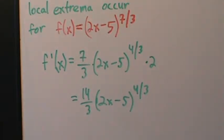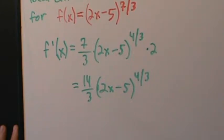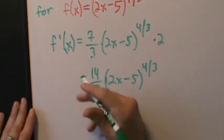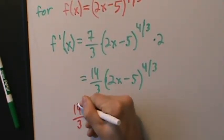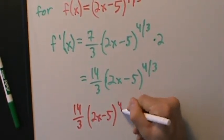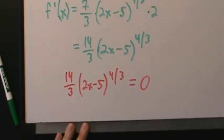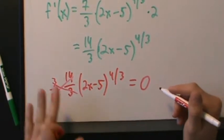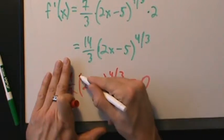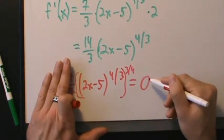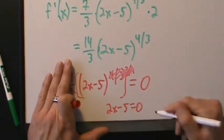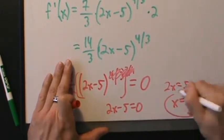So that's our first derivative. Now we want to find the critical points — the values of x where the derivative is undefined or equals 0. This derivative is never undefined, so we only need to find when it equals 0. Set (14/3)(2x - 5)^(4/3) = 0. This only happens when (2x - 5)^(4/3) = 0. Multiply both sides by 3/14, raise both sides to the 3/4, and we get 2x - 5 = 0, so 2x = 5, so x = 5/2. That's our only critical point.